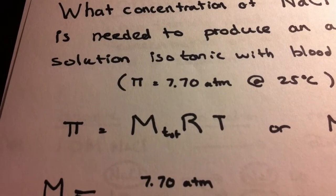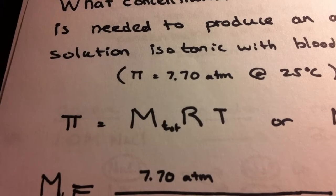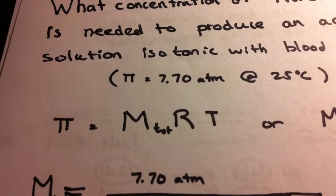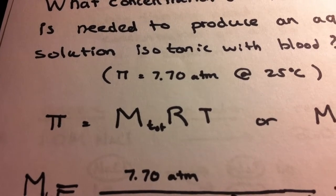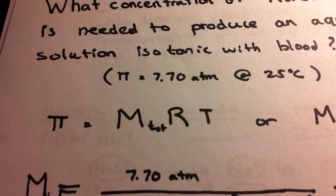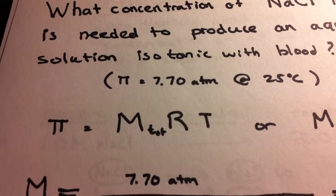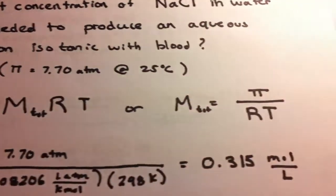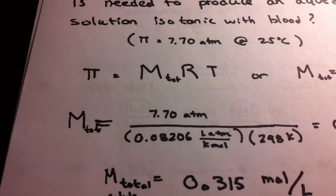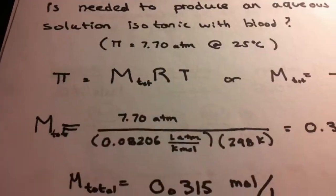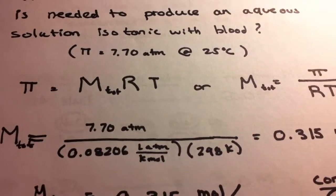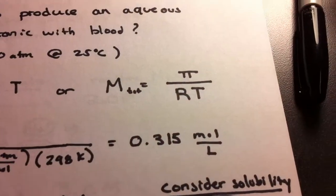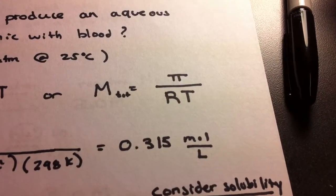Rewrite your equation. But this time, instead of M, write M total. In this case, total means the total particles of solute available. Plug and chug. We're given the pressure, we're given R, and we're given T, and M comes out to 0.315 moles per liter.